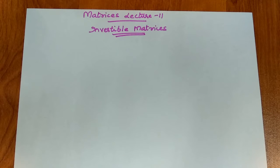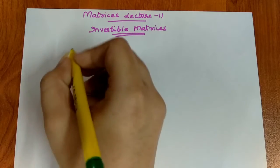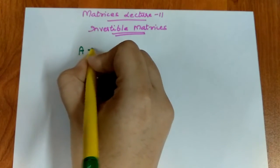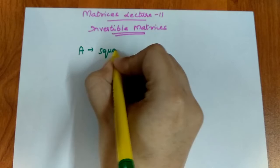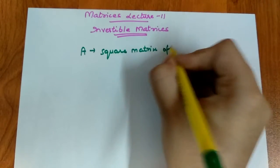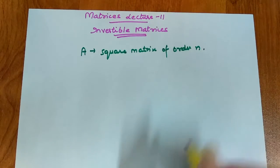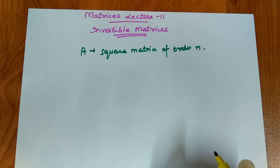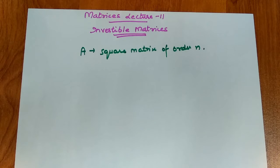Hello everyone, welcome back to my channel. In this video we will be covering invertible matrices. Let's understand the definition of invertible matrices. If we have been given a square matrix A of any order n, and another square matrix B exists with the same order n.